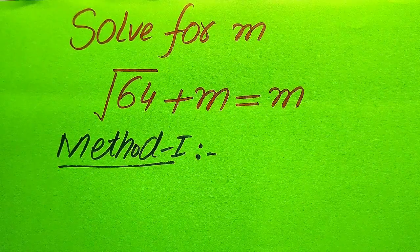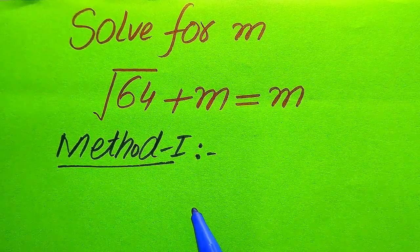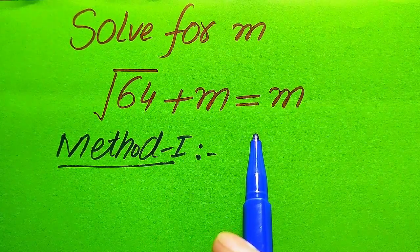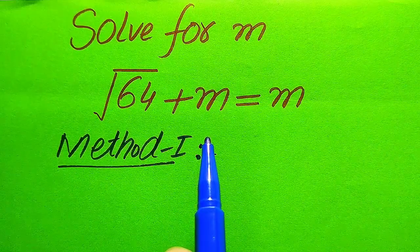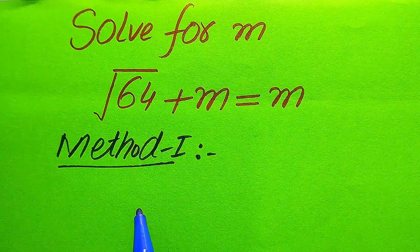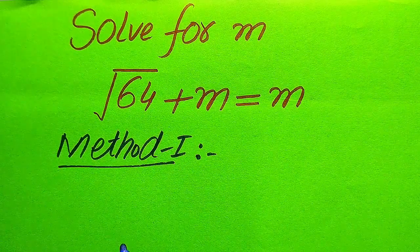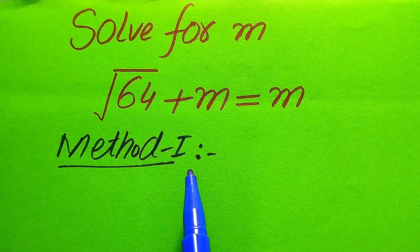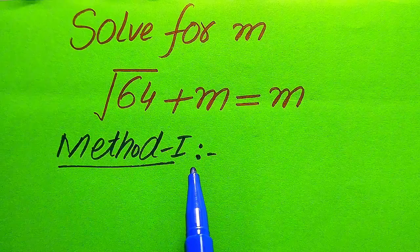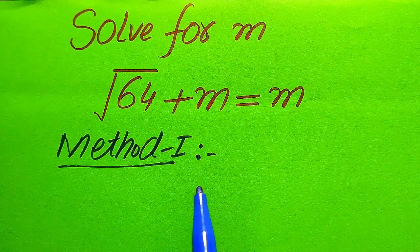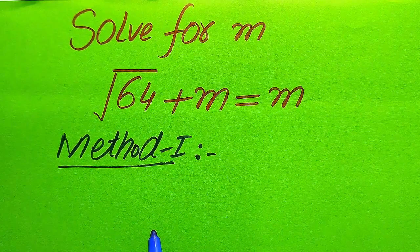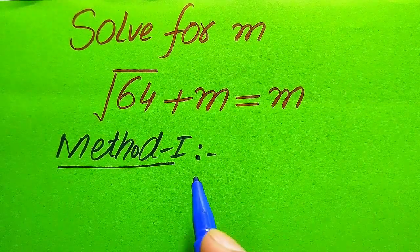The reason for solving this problem by the first method is: if in your exam the question statement says to just find the roots of this equation, or find the values of m, then you must use the first method. If the question statement asks you to determine whether a solution exists or not, then you can go directly to the second method. But both methods are valid for solving this problem.